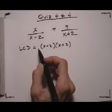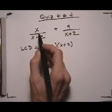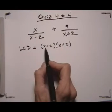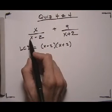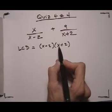Now what we need to do is make sure each fraction is rewritten using the LCD as a common denominator. So if we look at the first fraction, it already has an x minus 2, but it does not have an x plus 2.